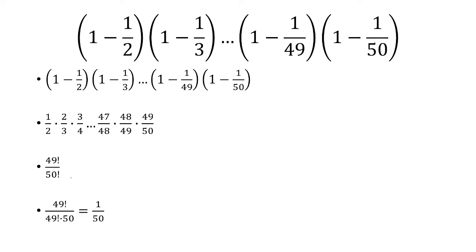And 50 factorial can be rewritten as 49 factorial times 50. And so the 49 factorial is going to cancel, and I'm left with 1 over 50.